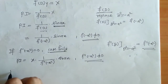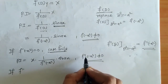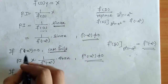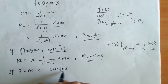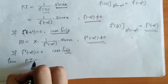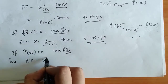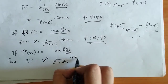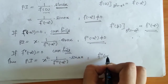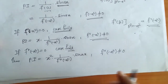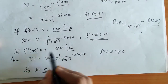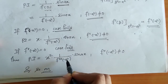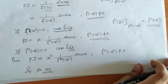If again that denominator f'(-a²) gets zero, that case also fails. Then we proceed further — we multiply by x again, so we have x², and now we have f''(-a²) in the denominator. The condition is that this denominator should not be zero. We proceed this way until we get a finite PI, or until we get a denominator which is free from D.